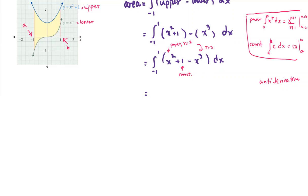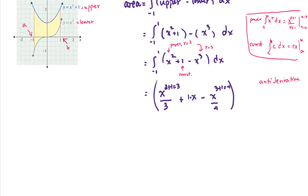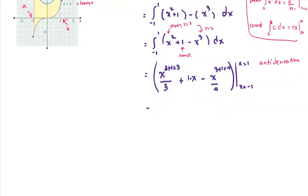Applying the rules term by term: x² becomes x³/3 using the power rule (r = 2, new power = 3). The constant 1 becomes 1·x = x using the constant rule. Then x³ becomes x⁴/4 using the power rule (r = 3, new power = 4). The integral and dx symbols drop away. Written in clean form: (1/3)x³ + x − (1/4)x⁴, evaluated from x = −1 to x = 1.